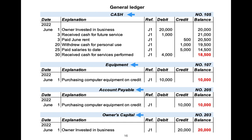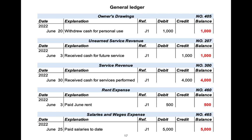The balance in each account is shown in red. This is the general ledger for owners drawing. This is the general ledger for the remaining accounts, and the bank account balance is shown in red.